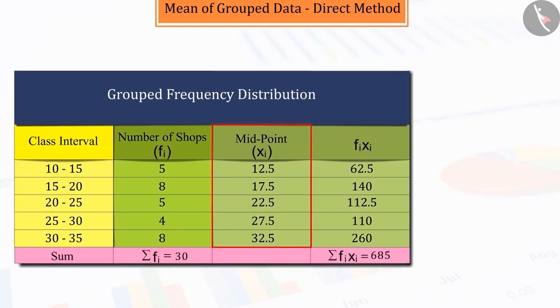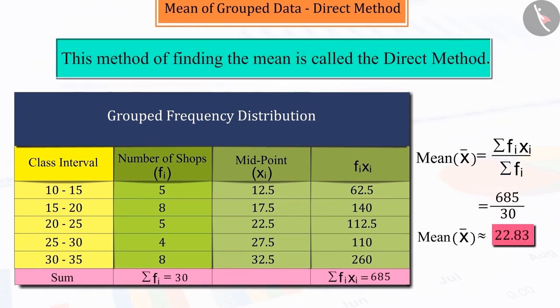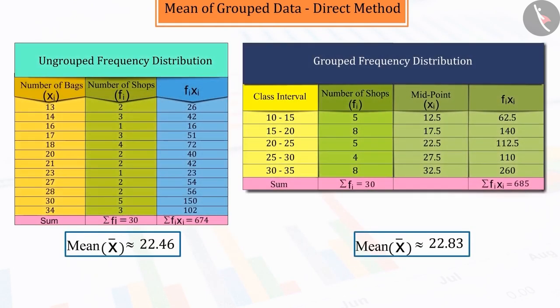Now, multiply all these midpoints with their corresponding frequencies and find their sum, that is, 685, and dividing it by the sum of their frequencies, that is, 30. The mean of the given data is thus obtained as 22.83 approximately. This method of finding the mean is called the direct method.